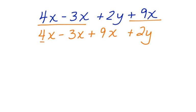Then I can perform the combining of like terms right here. 4x minus 3x is 1x plus 9x would give me 10x plus 2y.